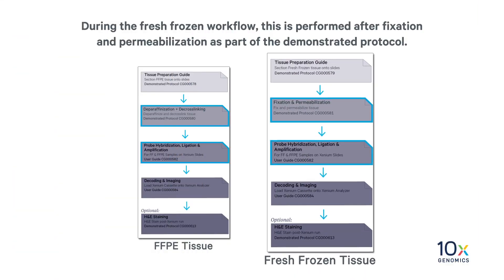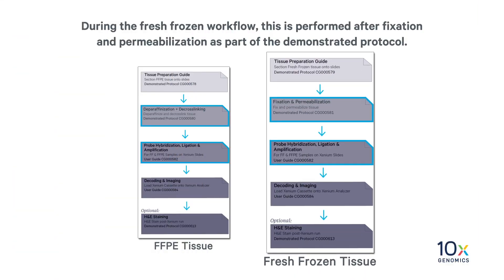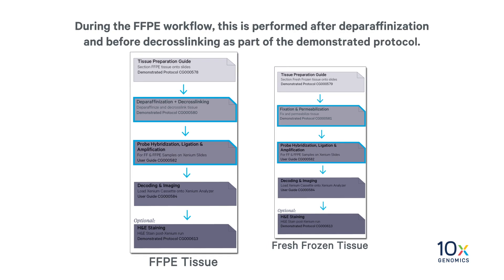In this video, we will highlight cassette assembly and pipetting techniques that are used throughout the Xenium protocols. During the fresh frozen workflow, this is performed after fixation and permeabilization as part of the demonstrated protocol. During the FFPE workflow, this is performed after deparaffinization and before decrosslinking as part of the demonstrated protocol.